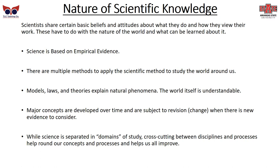A theory is something that has a broad background behind it but may not have been proved mathematically. Once it's proved mathematically, that's a law. A model might be how that math is written out. But all of these explain natural phenomena.